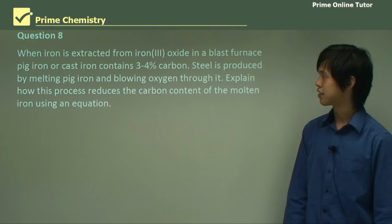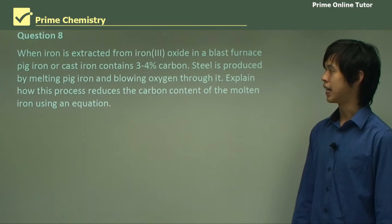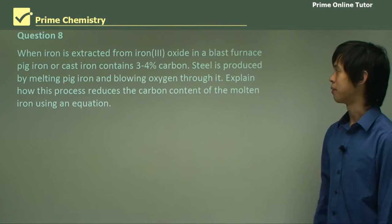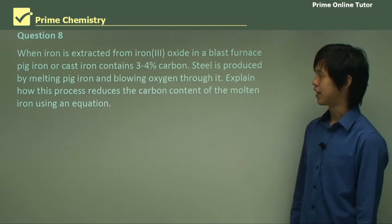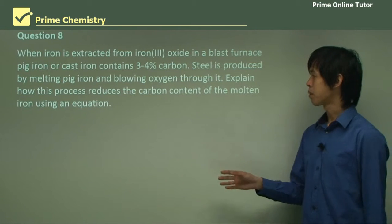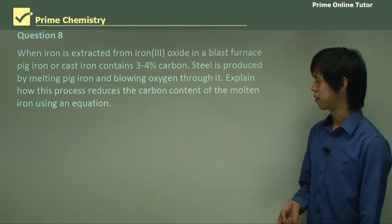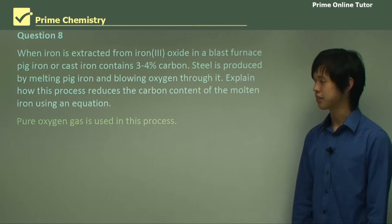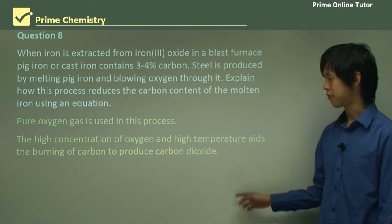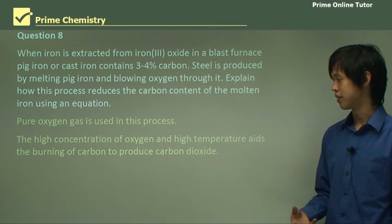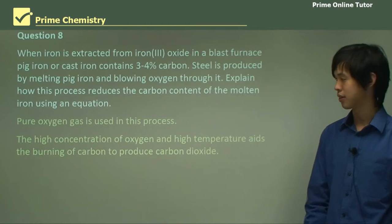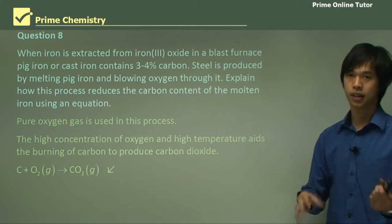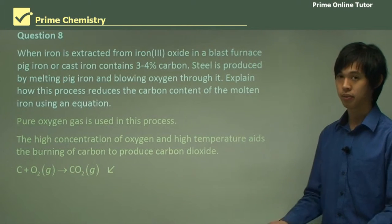Question: When iron is extracted from iron oxide in a blast furnace, pig iron or cast iron contains 3 to 4% carbon. Steel is produced by melting pig iron and blowing oxygen through it — explain how this reduces the carbon content using an equation. Pure oxygen gas is used; the high concentration of oxygen and high temperature causes the carbon to burn, forming carbon dioxide and carbon monoxide: C + O₂ → CO₂, or 2C + O₂ → 2CO.